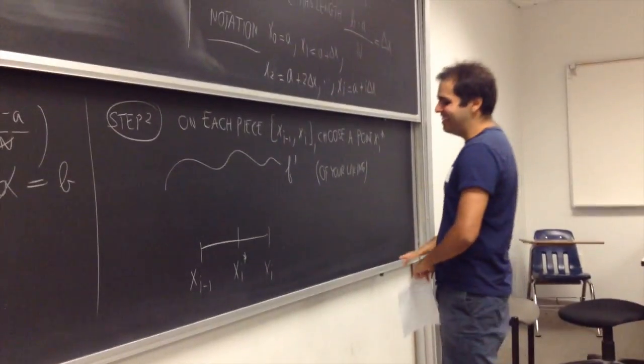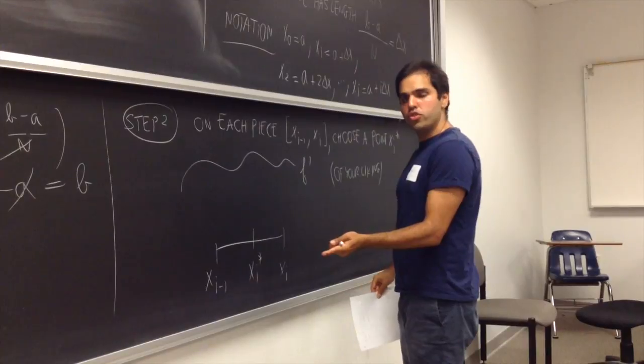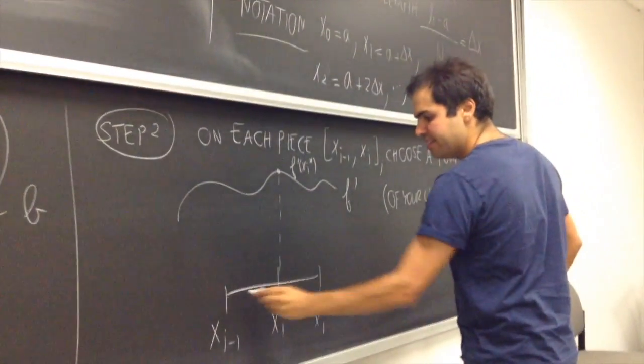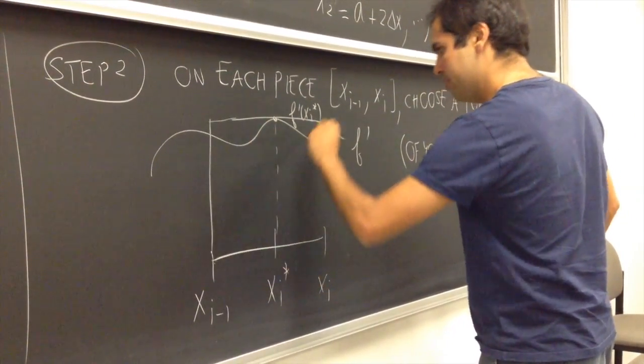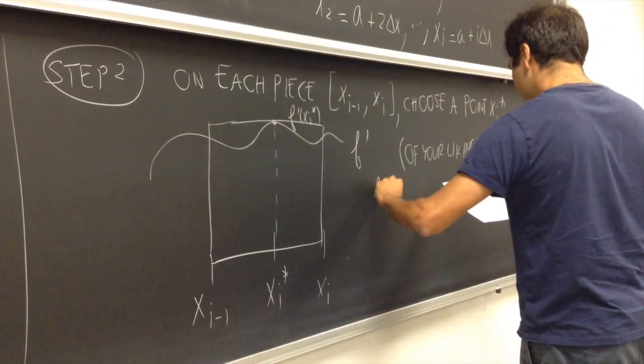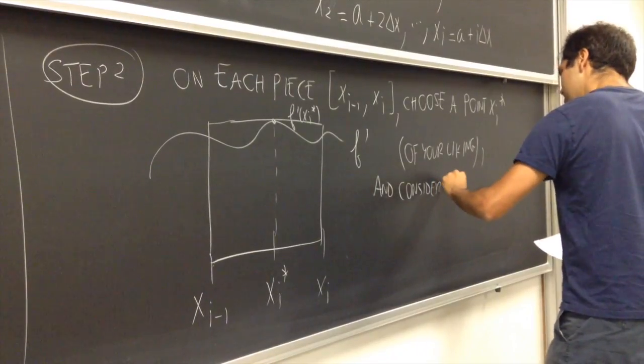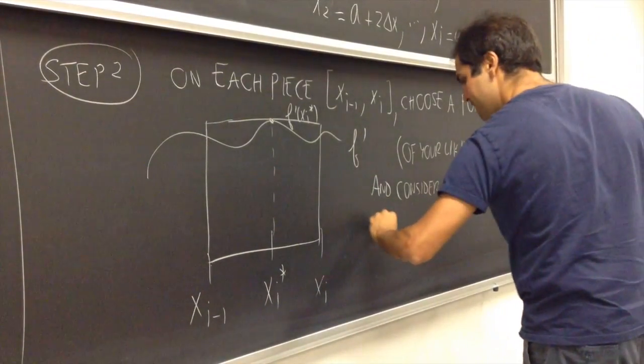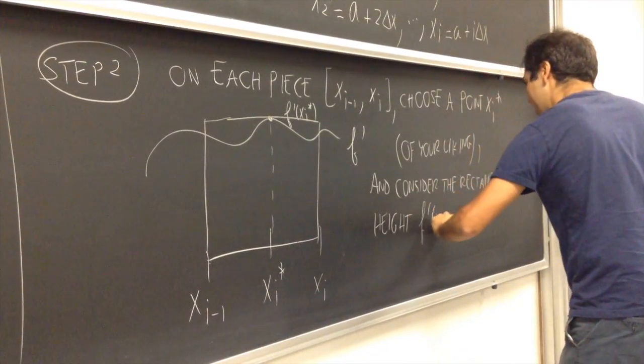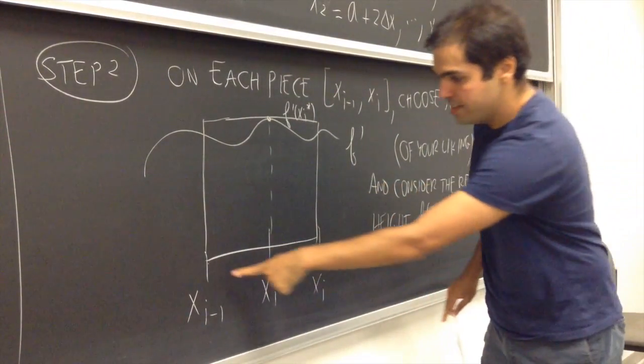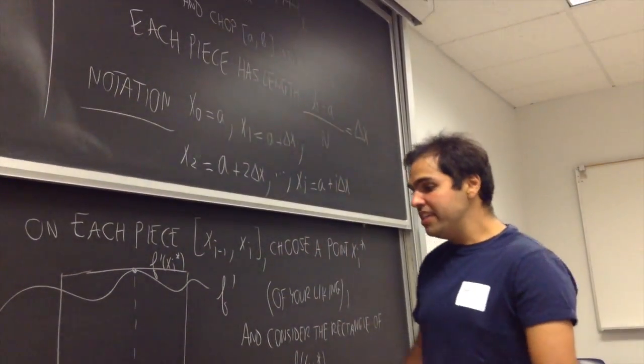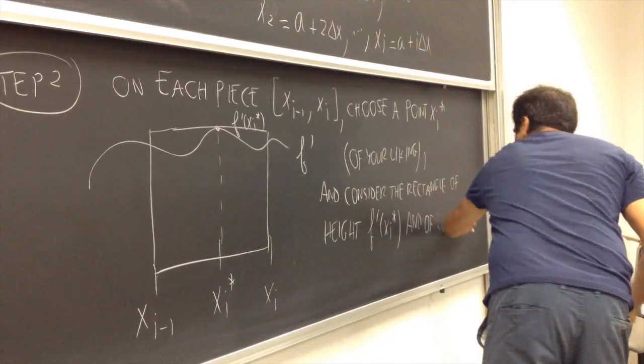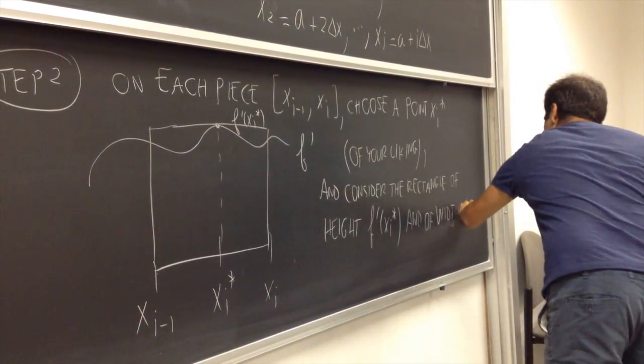But the point, no pun intended, is that once you choose the xi star, you consider a certain rectangle. A rectangle of height, f prime xi star, and of width, this length here. So, maybe this rectangle here. So, choose a point xi star, and consider the rectangle of height, f prime of xi star, and width. The width is precisely the length of this piece. But remember, the length of this piece is just delta x. So, of width delta x.